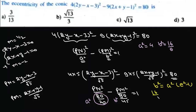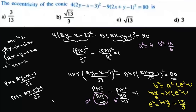Using b² = a²(e² - 1): 16/9 = 4(e² - 1), so e² - 1 = 4/9, giving e² = 1 + 4/9 = 13/9. Therefore e = √13/3, which is option B. This demonstrates how to handle hyperbola problems where the axes are perpendicular but not parallel to the coordinate axes.